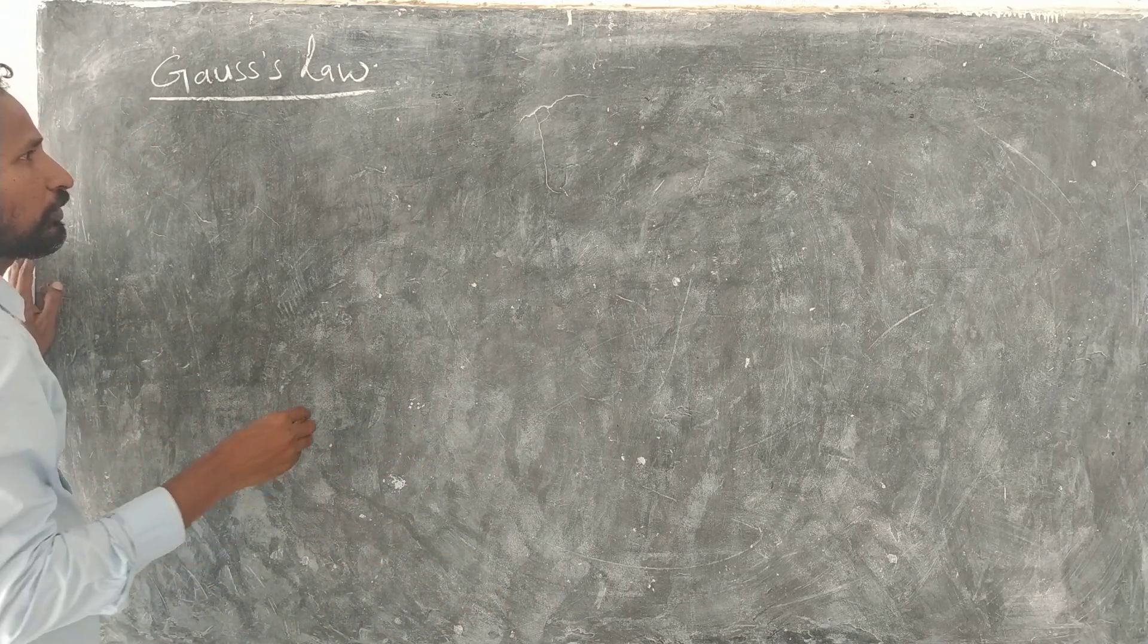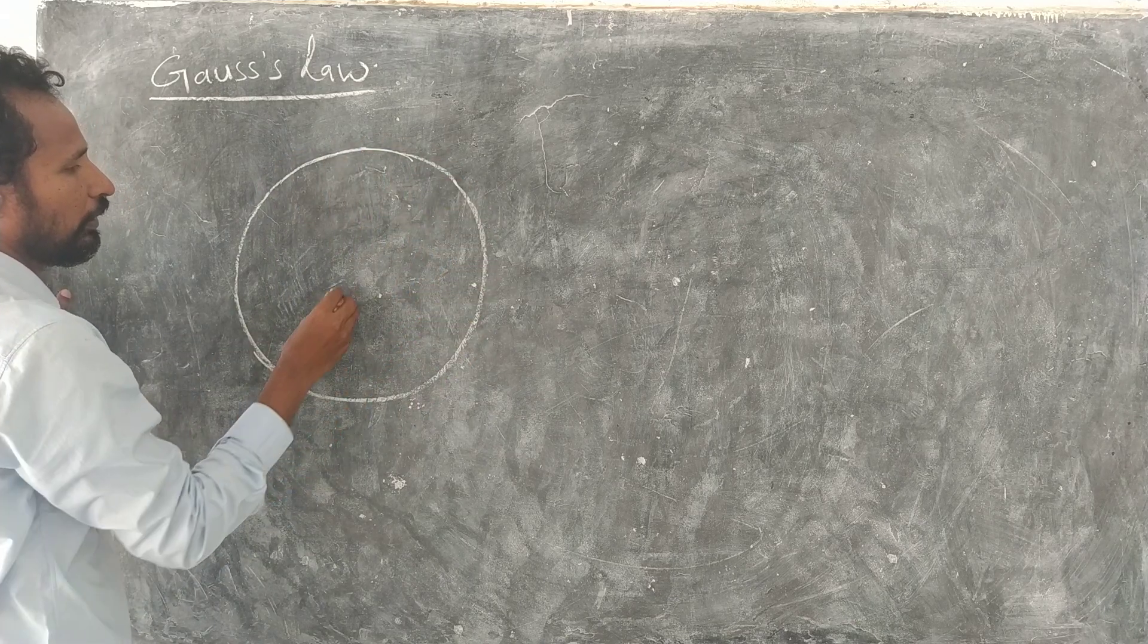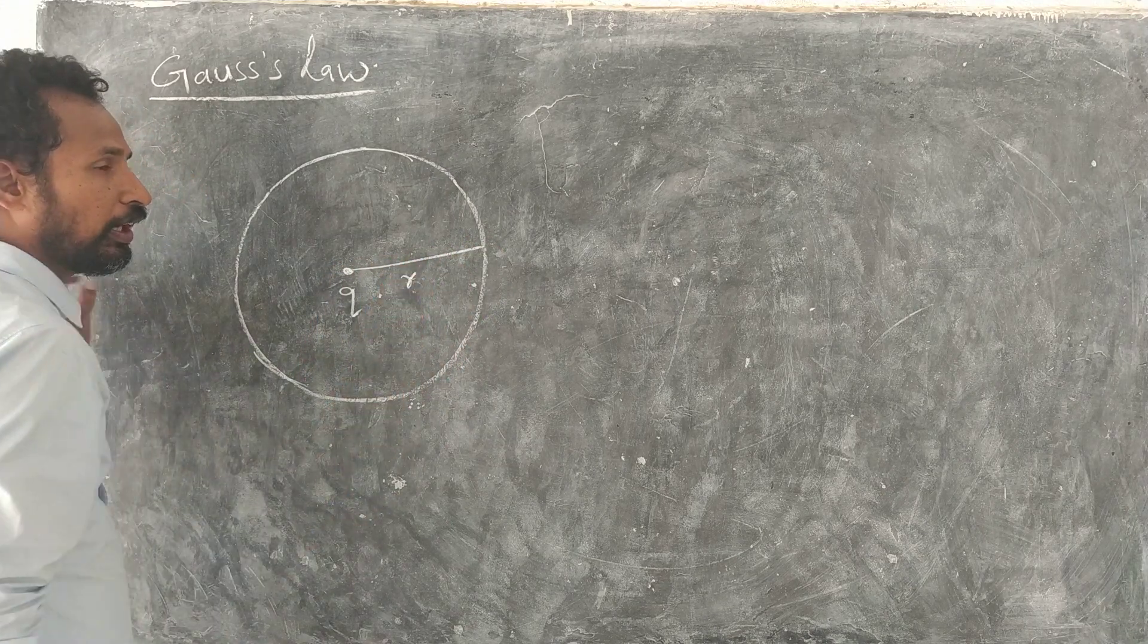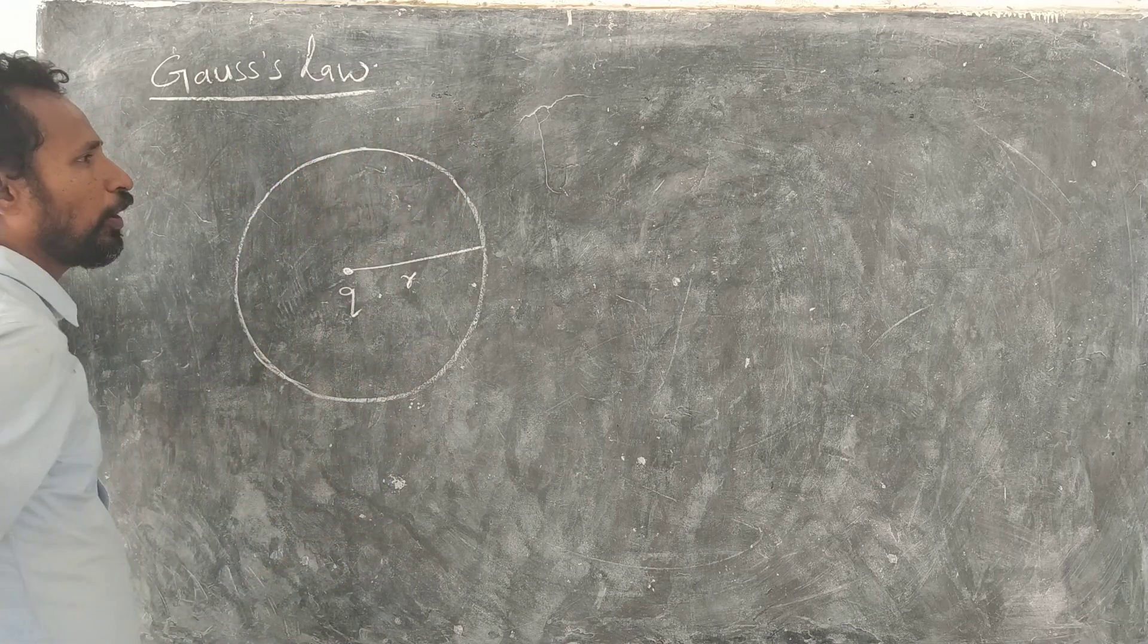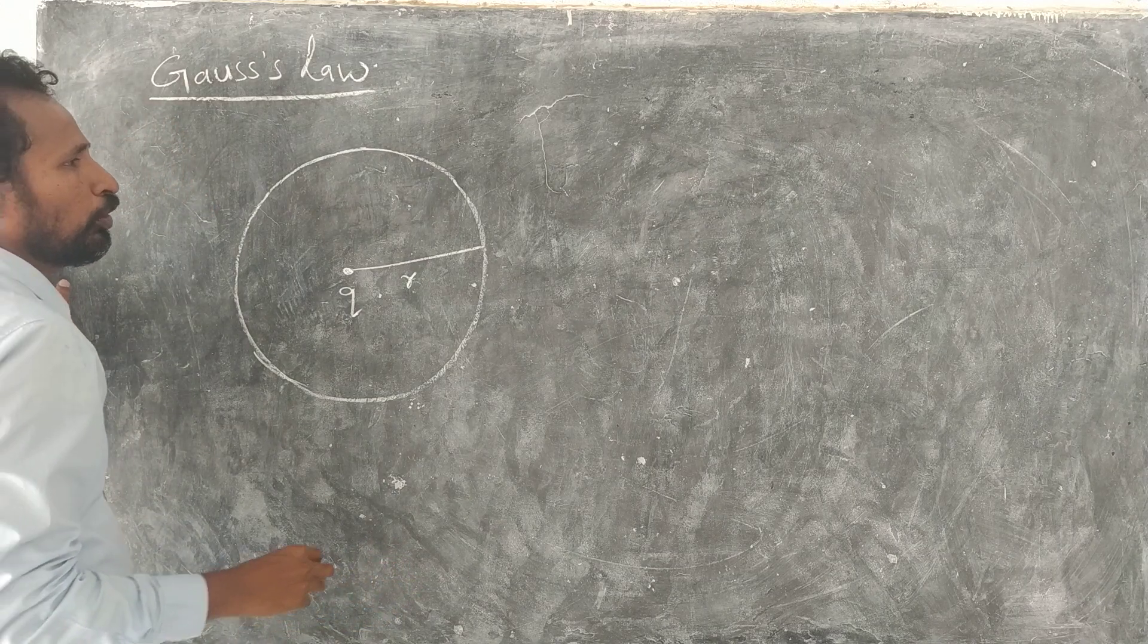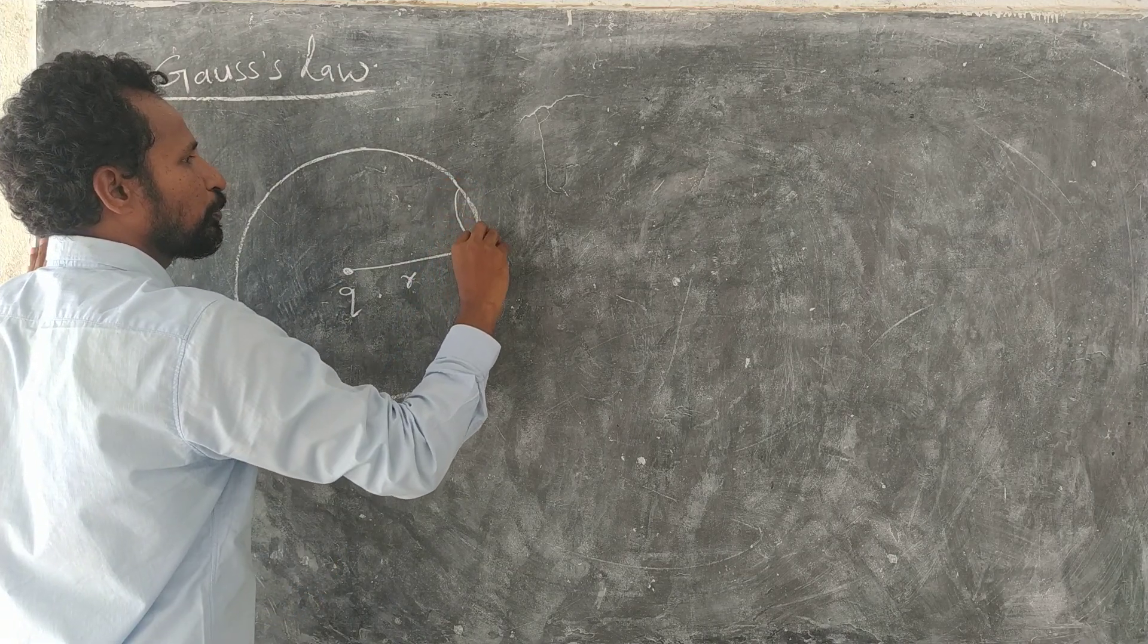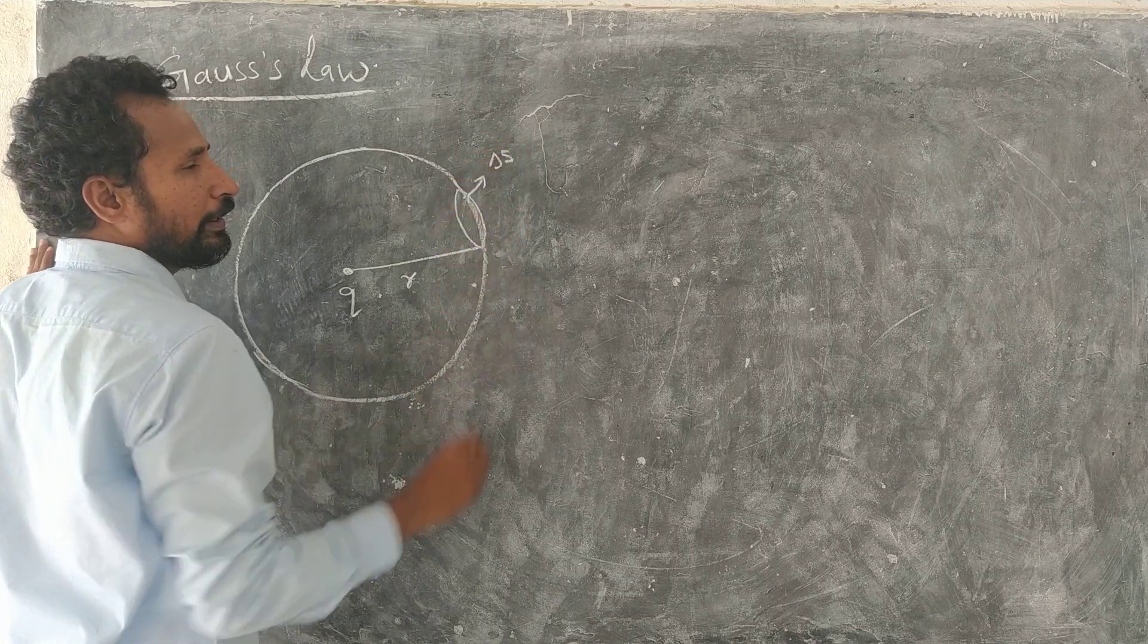Now take a sphere. At the center if you place a point charge q, the radius of this sphere consider r. Then what happens? Electric field lines act radially outwards, clear. Now flux through the surface I would like to find.